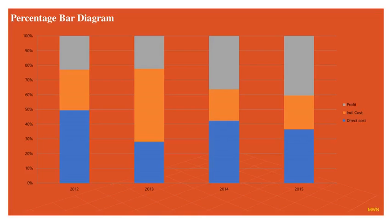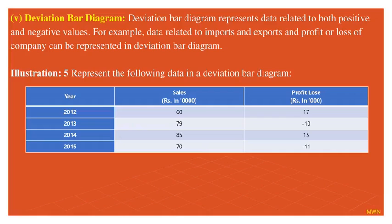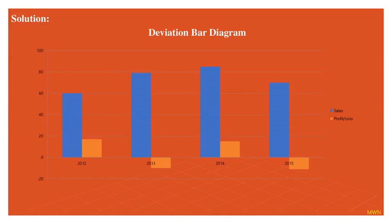Deviation bar diagram: in this diagram, bars can go below the x-axis. For example, for profit and loss, year and sales data are given for 2012 to 2015. You can find from this diagram that sales are in blue color and profit or loss in brown color. Loss goes down below the axis, while profit goes up in the second year and fourth year.